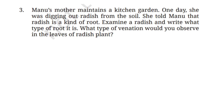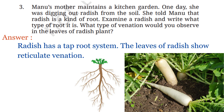The third question is: Manu's mother maintains a kitchen garden. One day she was digging out radish from the soil and told Manu that radish is a kind of root. Examine a radish and write what type of root it is, and what type of venation you would observe in its leaves. Radish is a taproot, as it has one main thick root that grows deep into the soil. The radish we eat is the swollen part of this taproot used to store food. Since radish has a taproot system, its leaves show reticulate venation.